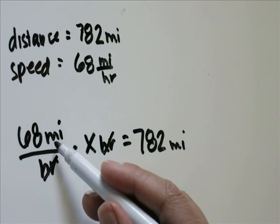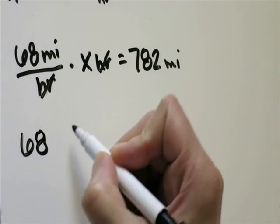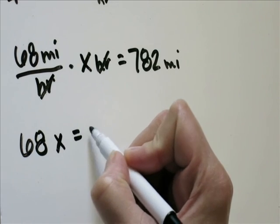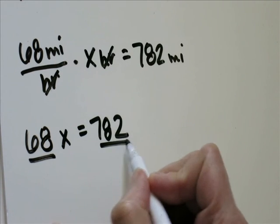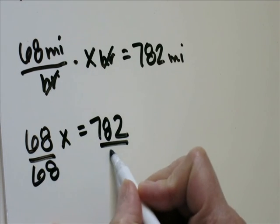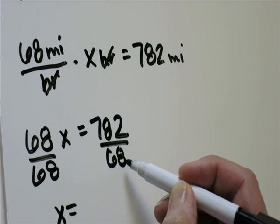Here hours will cancel out, leaving you with the miles. 68 times x equals 782. Divide each side by 68. x equals 782 divided by 68, which is 11.5 hours.